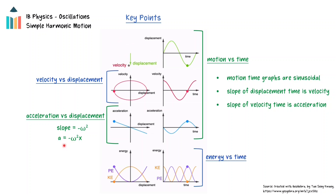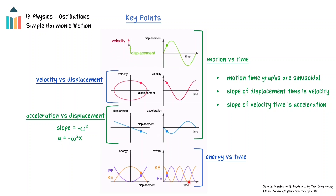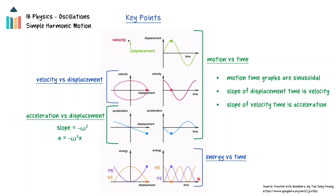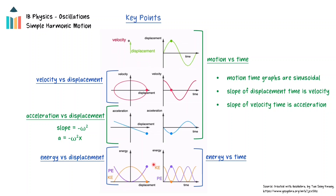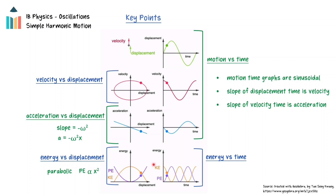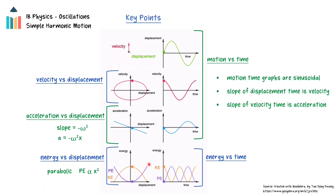Potential energy and kinetic energy as a function of time are sine squared graphs, and at any point the sum of the kinetic and potential energy is the total energy of the oscillator. When graphed as a function of displacement, the potential energy and kinetic energy graphs form parabolas, because the potential energy is proportional to the displacement squared. The total energy will be a horizontal line and will be equal to the sum of the potential and kinetic energies at any point.